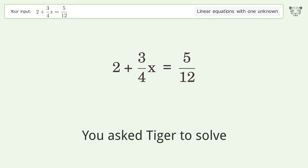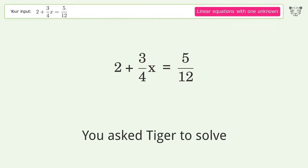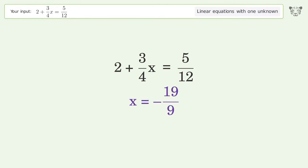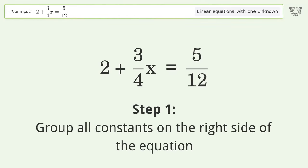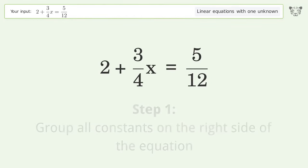You asked Tiger to solve this. This deals with linear equations with one unknown. The final result is x equals negative 19 over 9. Let's solve it step by step. Group all constants on the right side of the equation. Subtract 2 from both sides.